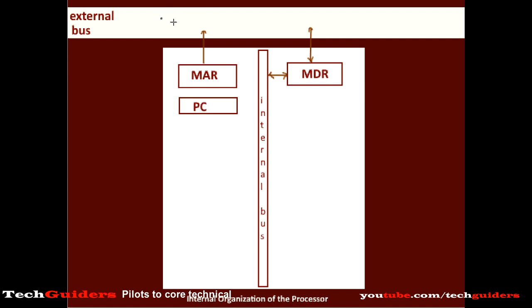That instruction has to be fetched to the processor. In order to fetch it, its address, which is in the program counter, should be kept on the external address bus. But the processor system communicates with the external address bus using the memory address register. Thus, the address from the program counter will be transferred to the memory address register and from there to the external address bus.